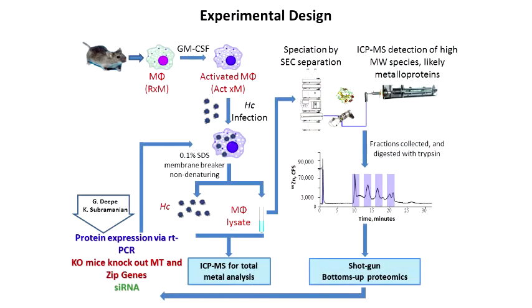We're going to want to do some elemental speciation. We're going to use primarily size exclusion for this because we don't need to do any more. We're going to typically monitor zinc versus time, and size exclusion will give us four or five peaks at high molecular weight and at low molecular weight.